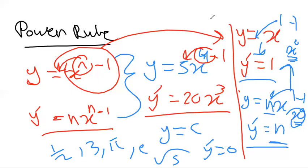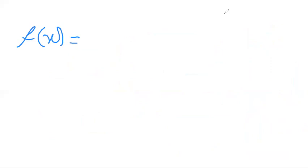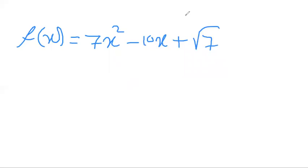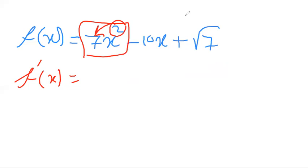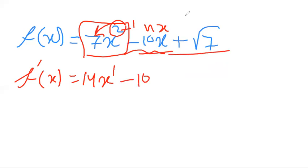Let's take a quick example. Let f(x) = 7x² minus 10x plus √7. We differentiate each term: the power rule gives 2 times 7 = 14, subtract 1, so 14x. The term −10x, using the nx rule, gives −10. And √7 is a constant, so its derivative is 0 — no need to write it. The result is 14x minus 10.